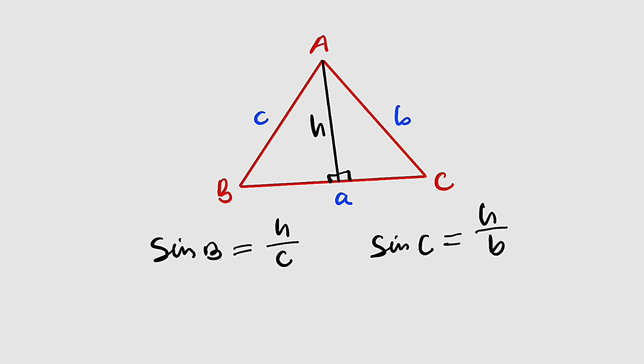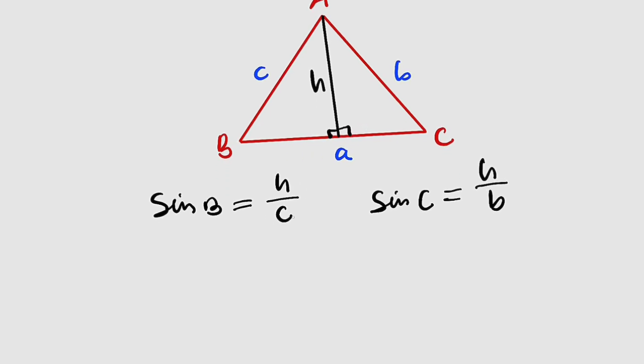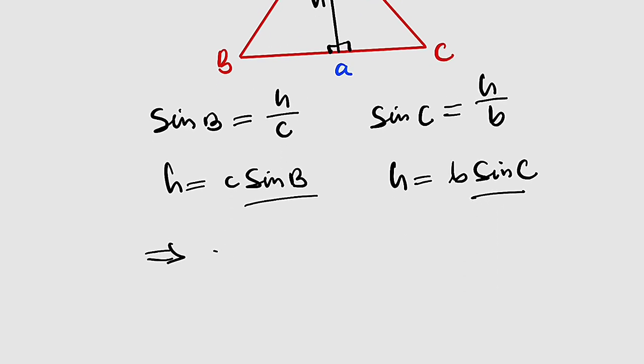I would like to make h the subject in both equations. By multiplying both sides by c, we have h equal to c multiplied by sine of B. Do the same thing here. We have h equal to b multiplied by sine of C. You can see that these two equations are both expressed in terms of h, which implies that their right-hand sides must be the same since their left-hand sides are the same. This implies that c multiplied by sine of B must be equal to b multiplied by sine of C.